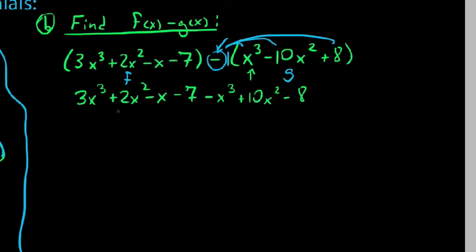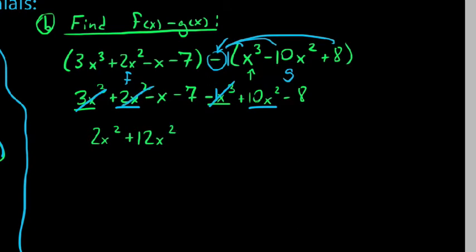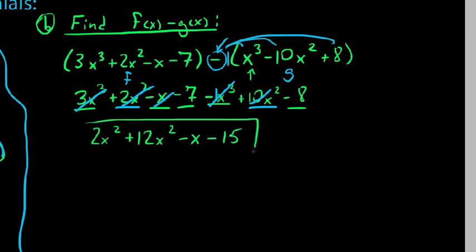So now we say x cubed: we have 3 plus negative 1, so 3 minus 1 is 2x cubed. Moving on to x squared: we have 2 and 10, making 12 total x squareds. We have just one x to the first, so minus x. And constant-wise, we have negative 7 and negative 8, a grand total of negative 15. So this is our difference of these two polynomials.